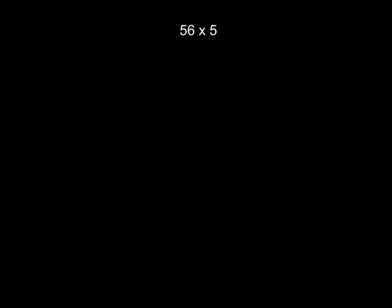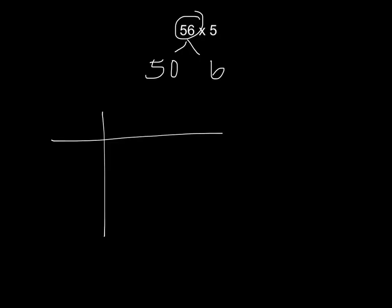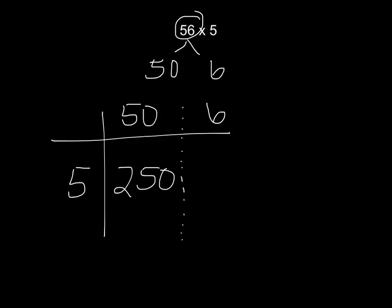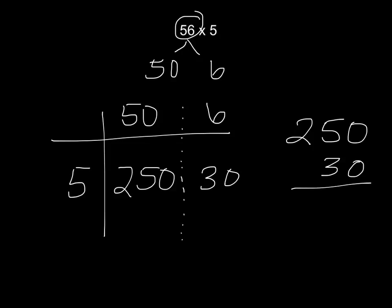Let's try this again: 56 times 5. I'm going to break apart my big number of 56 into its place value spots — 56 now becomes 50 and 6. We'll use the grid method to start. My multiplier is 5, and I will write my 50 and my 6 with dots down the center to help keep my numbers separate. I know 5 times 5 is 25, so 5 times 50 is 250. 5 times 6 is 30. When I add those two numbers together, 250 plus 30 is 280. 56 times 5 is 280.